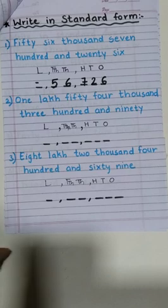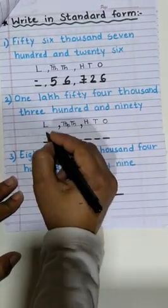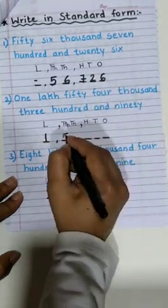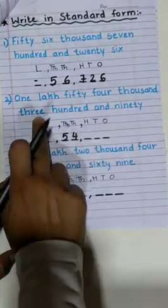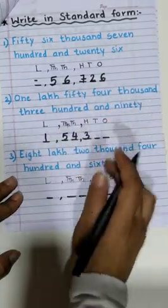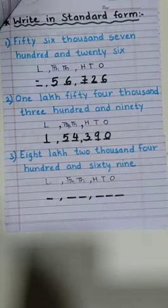Let's try one more. 1 lakh, so under lakhs we will write 1. 54,000, so here we will write 54. 300, so here we will go for 3. And 90. Easy. Cool.